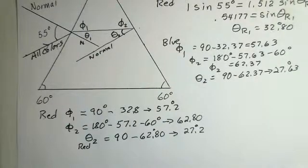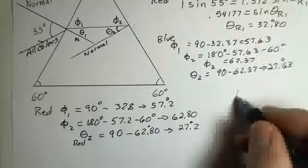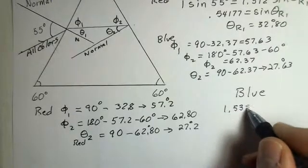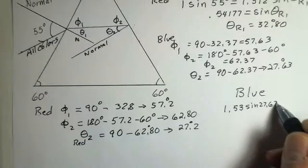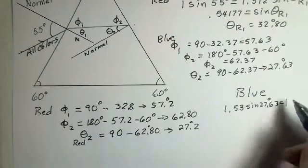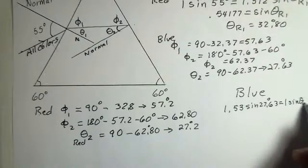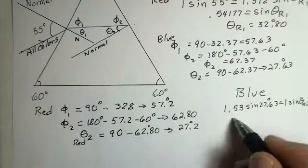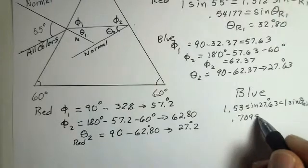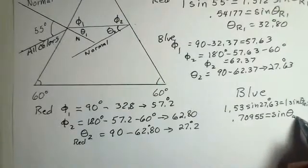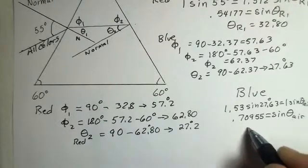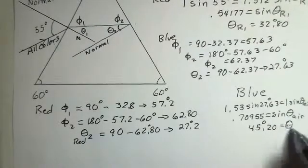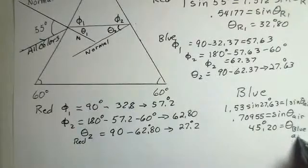Now, let's do the calculation for refraction out into the air. I'll put the blue here. We're in the glass. 1.53 for the index of refraction for blue light. So, I'll put the sine of 27.63 degrees. Index refraction in air is 1. And sine theta air. In doing the processing here, 1.53 times sine of 27, I came up with 0.70955 equals the sine of the angle in air.